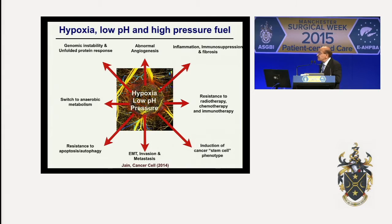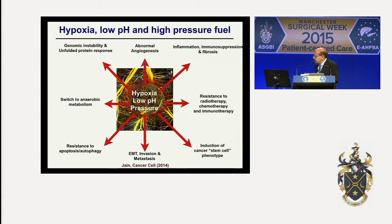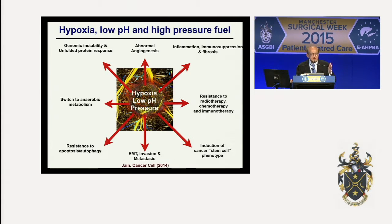The combination of hypoxia, low oxygen levels, low pH, and high fluid pressure fuels tumor progression and treatment resistance through multiple mechanisms. Hypoxia leads to abnormal blood vessels, causes inflammation, immunosuppression, fibrosis, and resistance to radiation therapy, chemotherapy, and immunotherapy. It induces cancer stem cell phenotype, leads to epithelial-mesenchymal transition, increases invasion and metastasis, causes resistance to apoptosis and autophagy, leads to anaerobic metabolism, causes genomic instability, and leads to unfolded protein response.